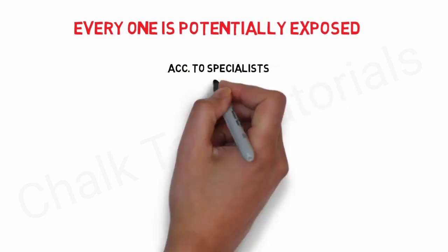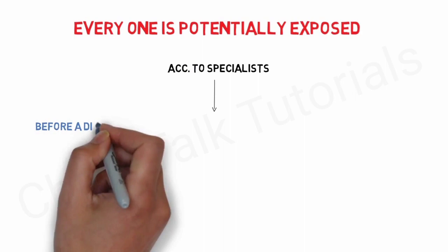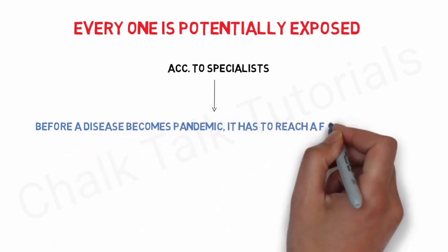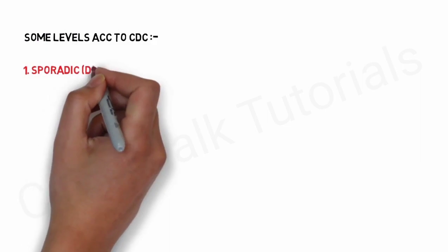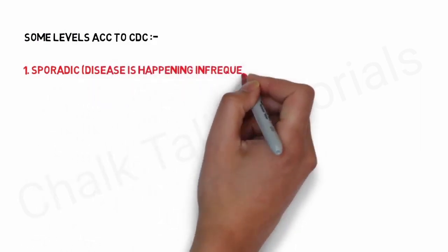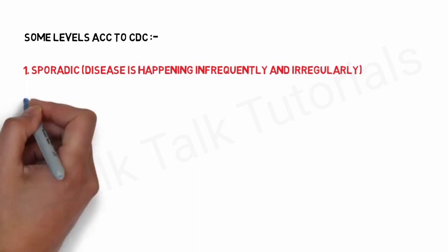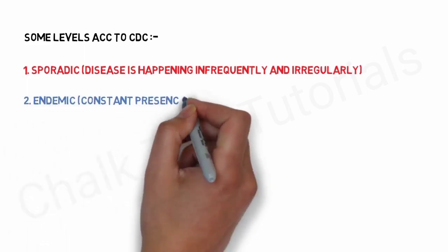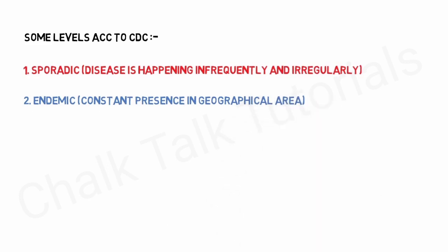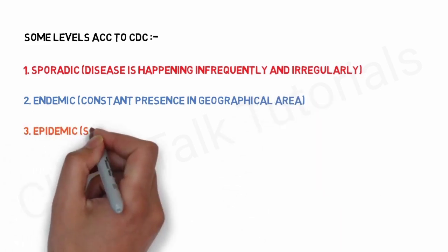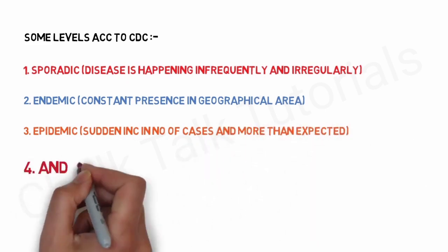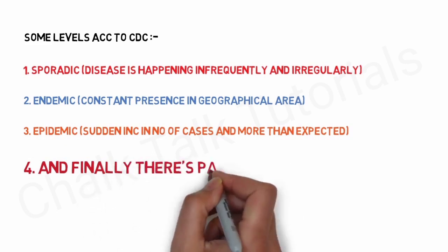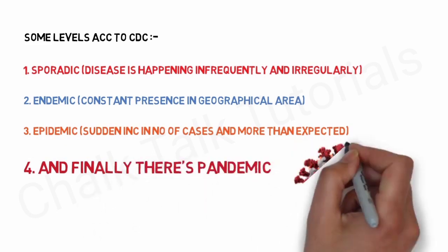According to specialists, before a disease becomes a pandemic, it has to reach a few other levels. These levels can be described differently according to different organizations. Here are some levels according to the Center for Disease Control. 1. Sporadic — used to describe when a disease is happening infrequently and irregularly. 2. Endemic — something that is constantly present in a geographic area. 3. Epidemic — a sudden increase in number of cases, more than what's expected for an area. And finally, there is pandemic, such as COVID-19.